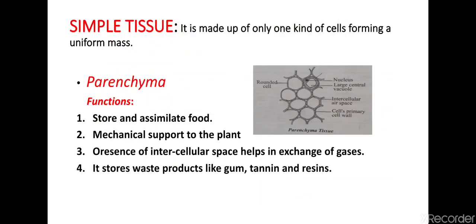Permanent tissues are further divided into two types: simple permanent tissues and complex permanent tissues. Simple permanent tissue is made up of only one kind of cells forming a uniform mass.